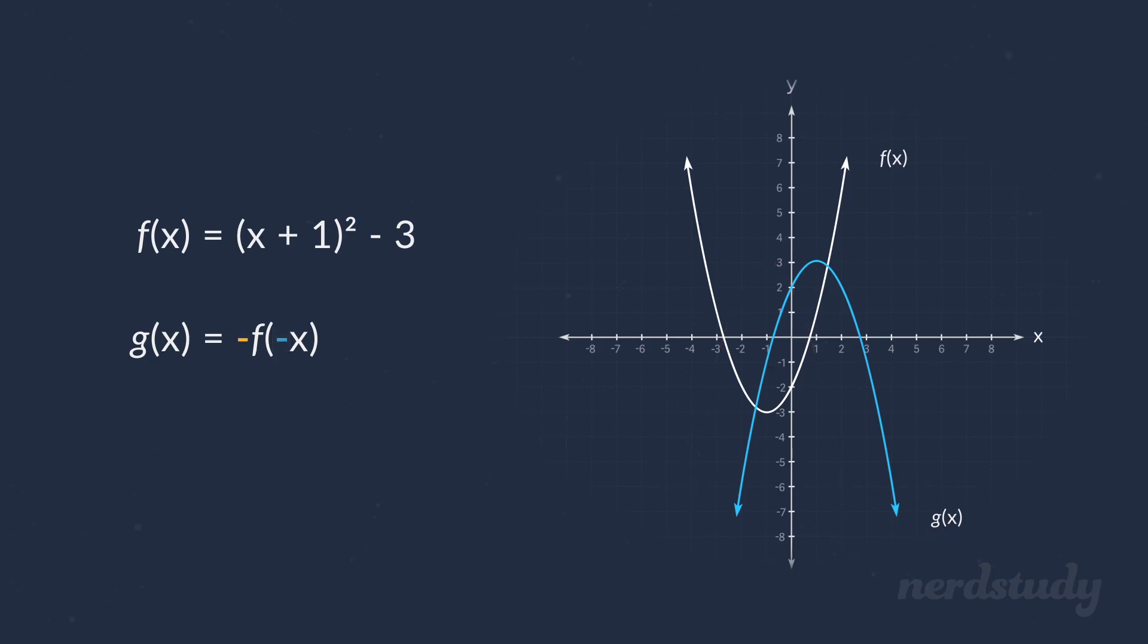If we wanted to actually apply it in terms of the equation, we would see that the negative x in here would become this, and the negative sign on the outside would apply to the whole equation. And remember, as a result, this causes a reflection of the graph along the x-axis. So, distributing the negative here would give us this final answer.